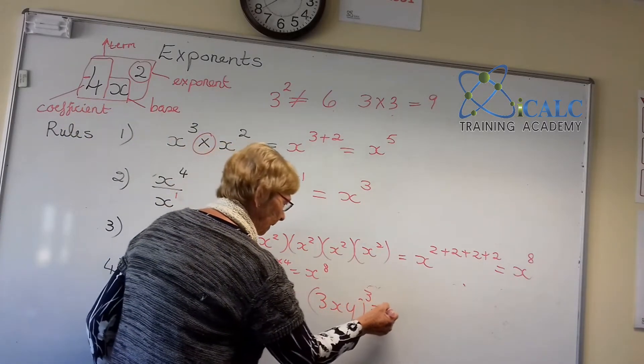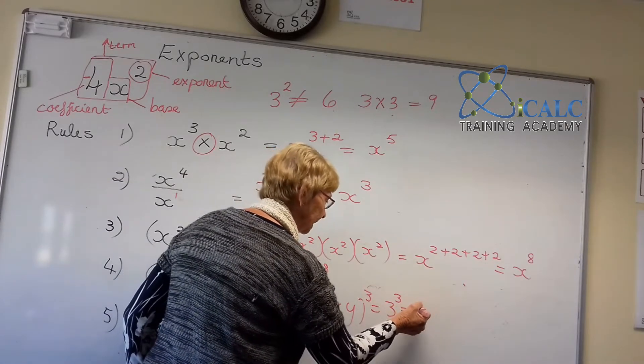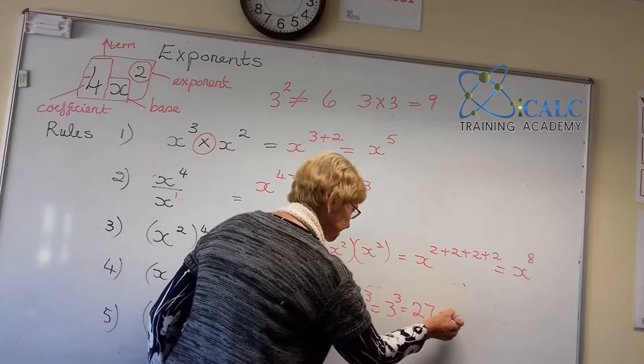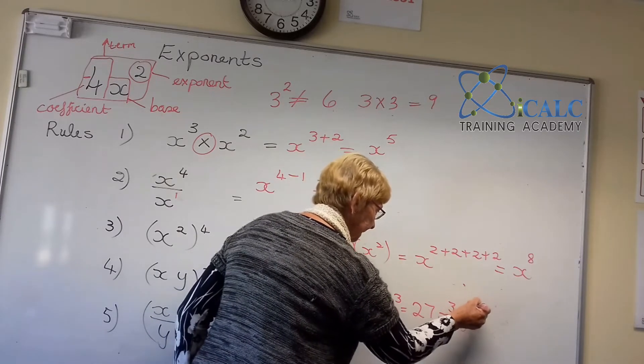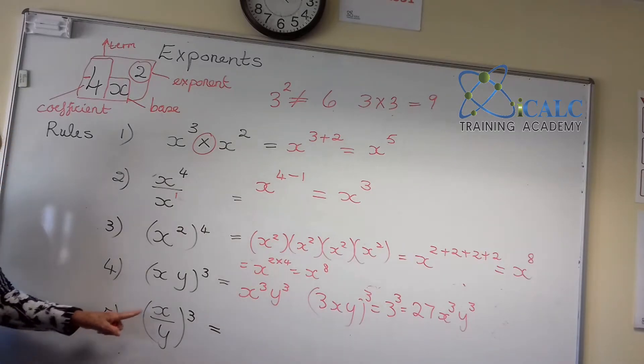Sorry. So that will become 3 to the power of 3, which gives you 3, 3s are 9, 3 nines are 27, x to the power of 3, y to the power of 3. And then your fifth ruling is the same when you are dividing.